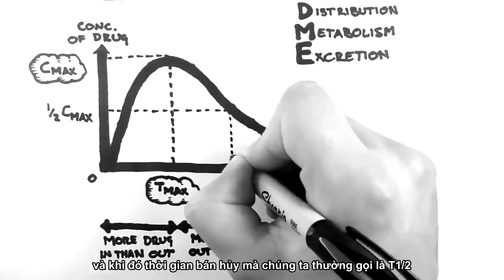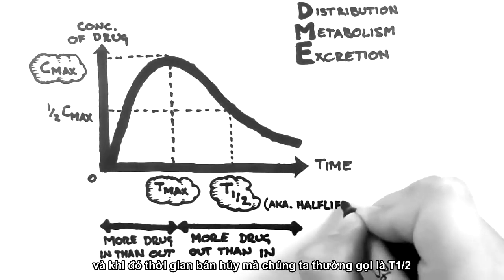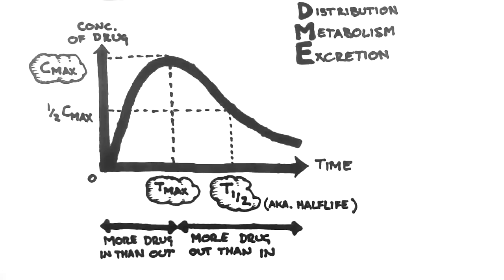Therefore, the half-life, which is often denoted T-half, is the time between Tmax and where I've drawn T-half here. So just to summarize, the time it has taken for the drug to drop from its maximum level to half of its maximum level is the half-life.